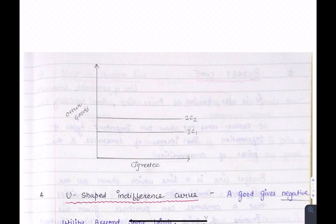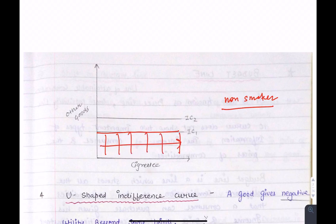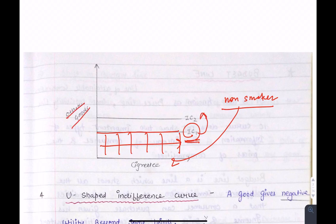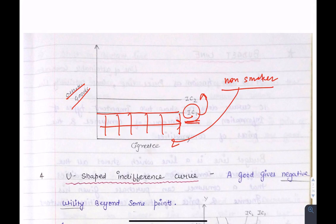The IC curve is horizontal in the case of a neutral good. Take a non-smoker as an example — it doesn't matter how many cigarettes are available. As we increase the quantity of cigarettes, we remain on the same IC curve because for a non-smoker, cigarettes provide no utility. So the satisfaction level will be the same whether the quantity of cigarettes increases or decreases, meaning a horizontal IC curve is possible.